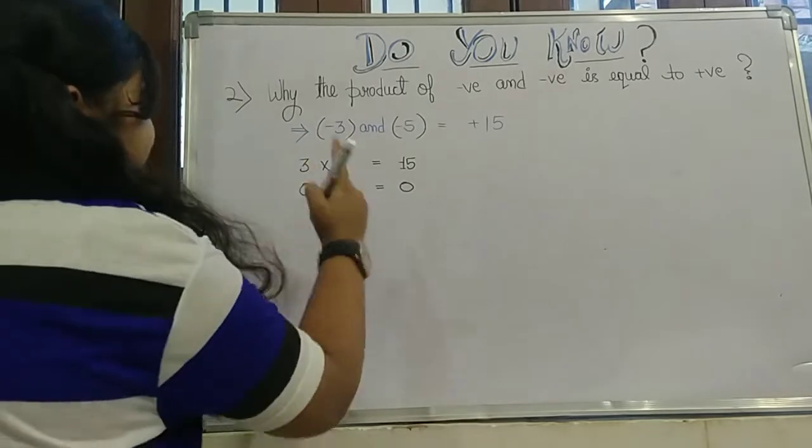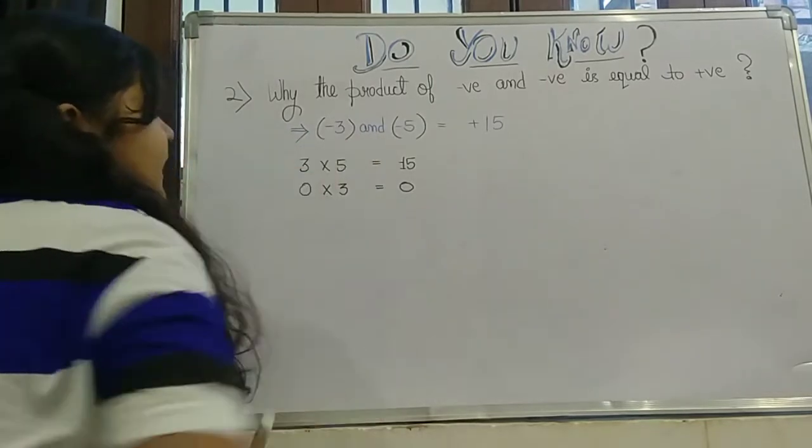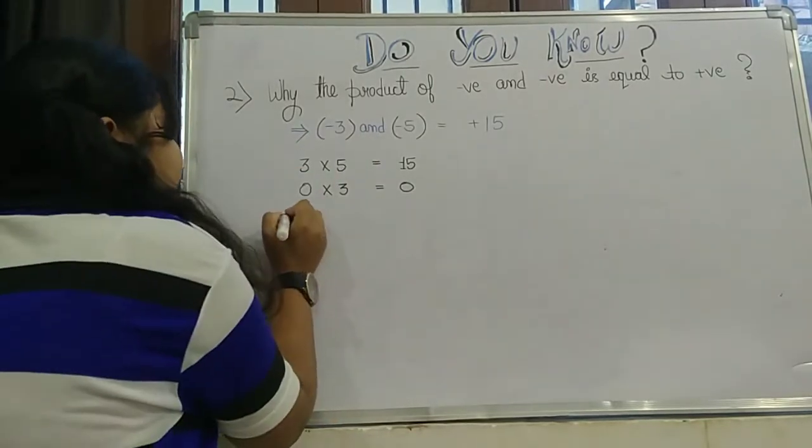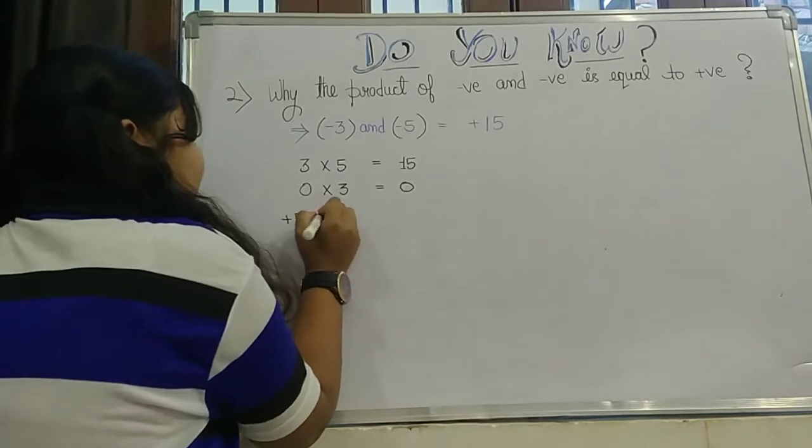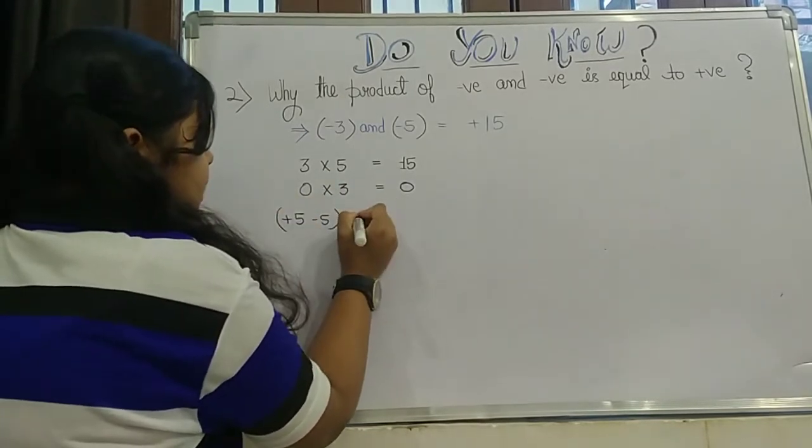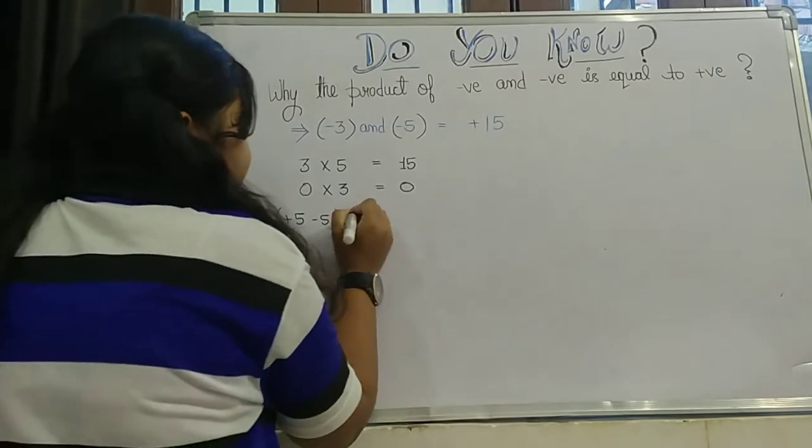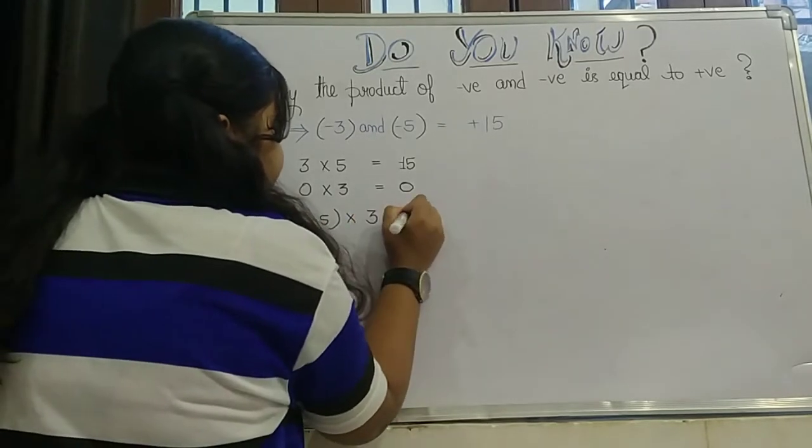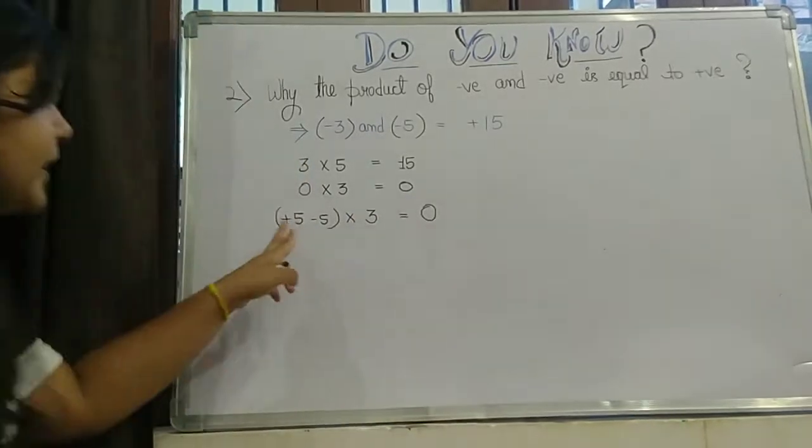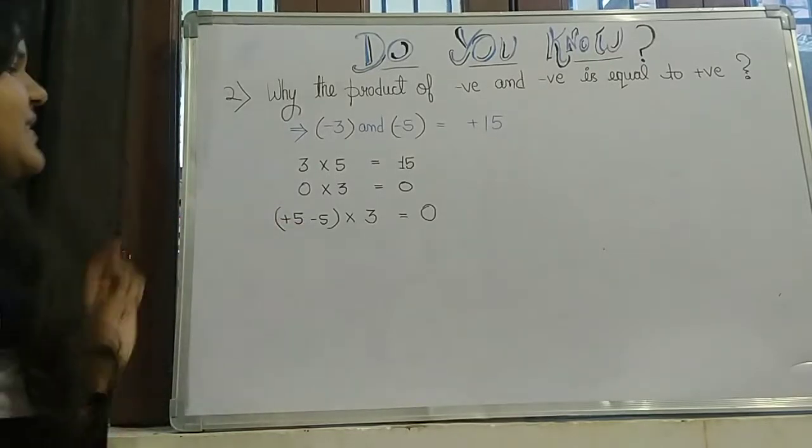Then can we make here 0 using 5? Yes, of course. Like plus 5 minus 5 into 3 is equal to 0. It will become 0. Next step.